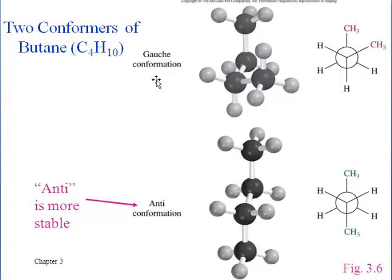A 60-degree torsion angle is called a gauche conformation — that's a French word. The methyl groups are said to be in a gauche arrangement. If you take the methyl group closest to us and twist it 120 degrees so that it's at the bottom, that creates the anti conformation, where the torsion angle between those methyl groups is 180 degrees.